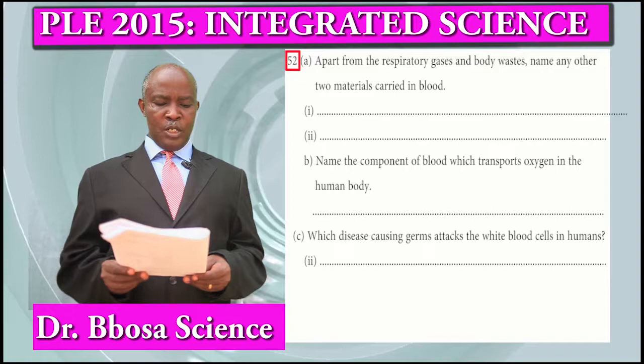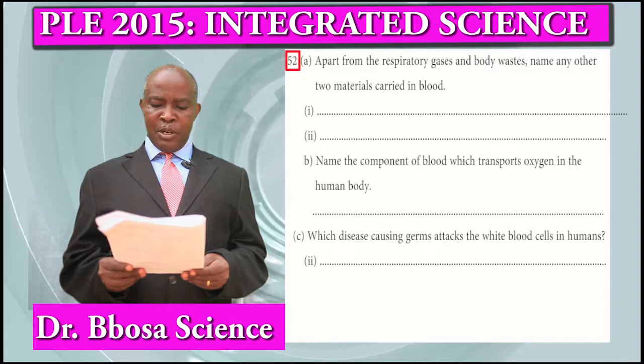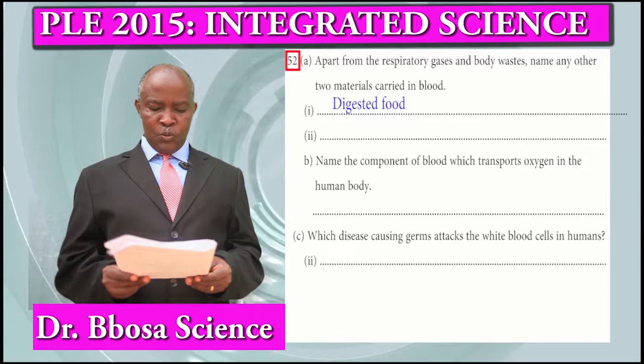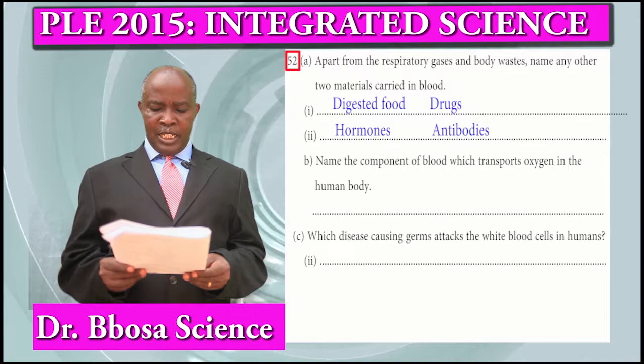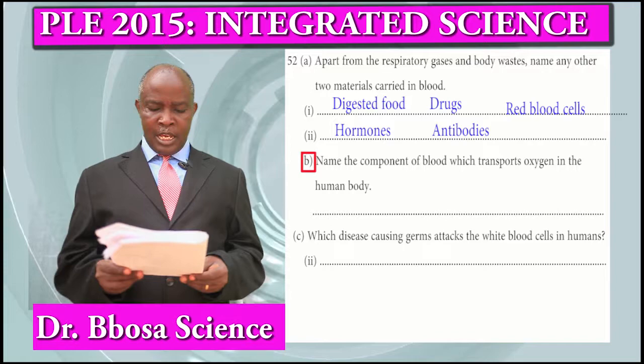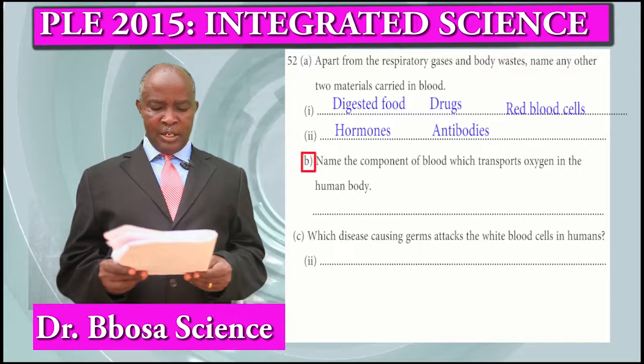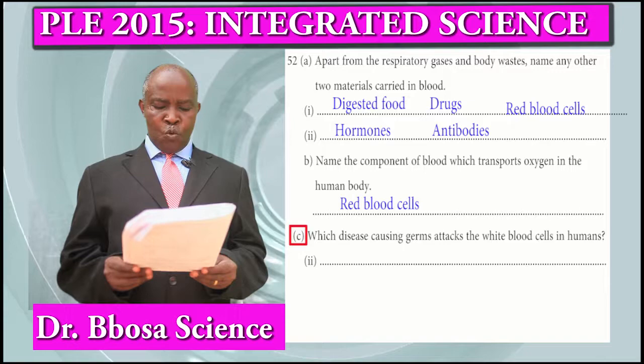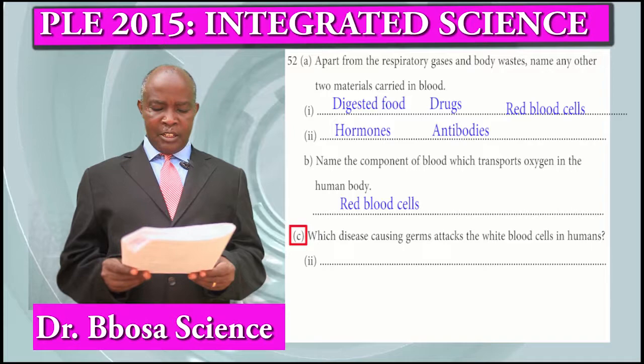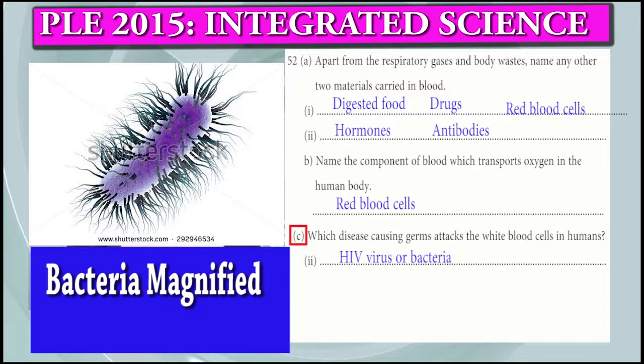Question 52a: Apart from respiratory gases and body waste, name any other two materials carried in blood. Digested food, hormones, drugs, antibodies, red blood cells. Part B: Name the component of blood which transports oxygen in the human body. That is red blood cells. Part C: Which disease-causing germ attacks white blood cells in humans? It can be HIV virus or bacteria.